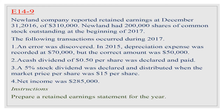Another exercise regarding the statement of retained earnings: The company reported retained earnings at December 31 of $310,000 and had 200,000 shares of common stock outstanding at the beginning of 2017. The following transactions occurred during 2017: (1) An error was discovered — 2015 depreciation expense was recorded at $70,000 but the correct amount was $50,000.